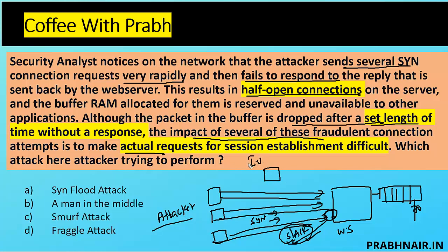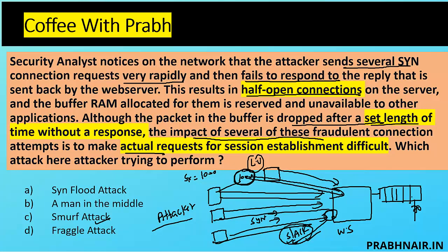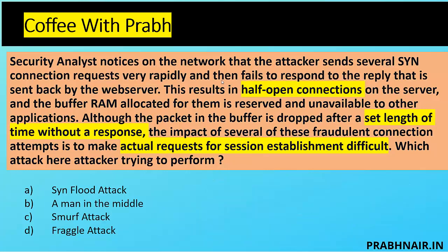Once the memory is filled, if any legitimate user wishes to access the server and sends a SYN packet, the web server will not be able to reply. So the answer is a SYN flood attack. Man-in-the-middle is not applicable because we are not intercepting anything. In a Smurf attack, we spoof IPs and generate traffic from 1,000 IPs toward the web server. In a Fraggle attack, UDP is used. Since the question doesn't specify UDP or ICMP, and the pattern matches a SYN flood, the correct answer is A — SYN flood attack.